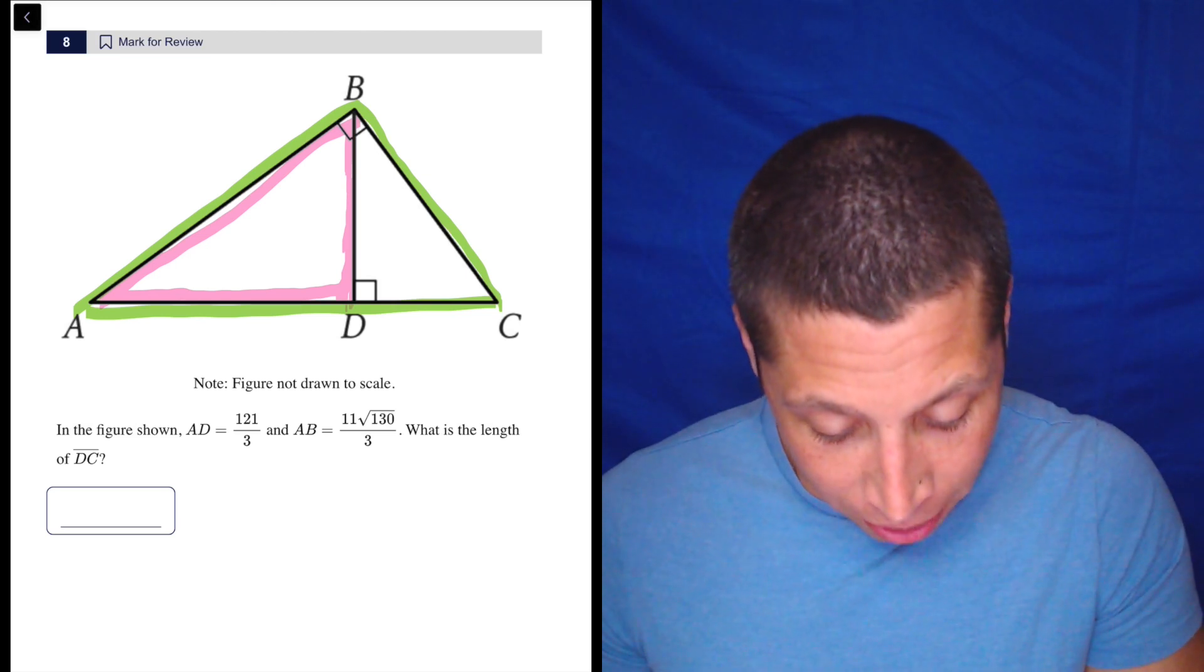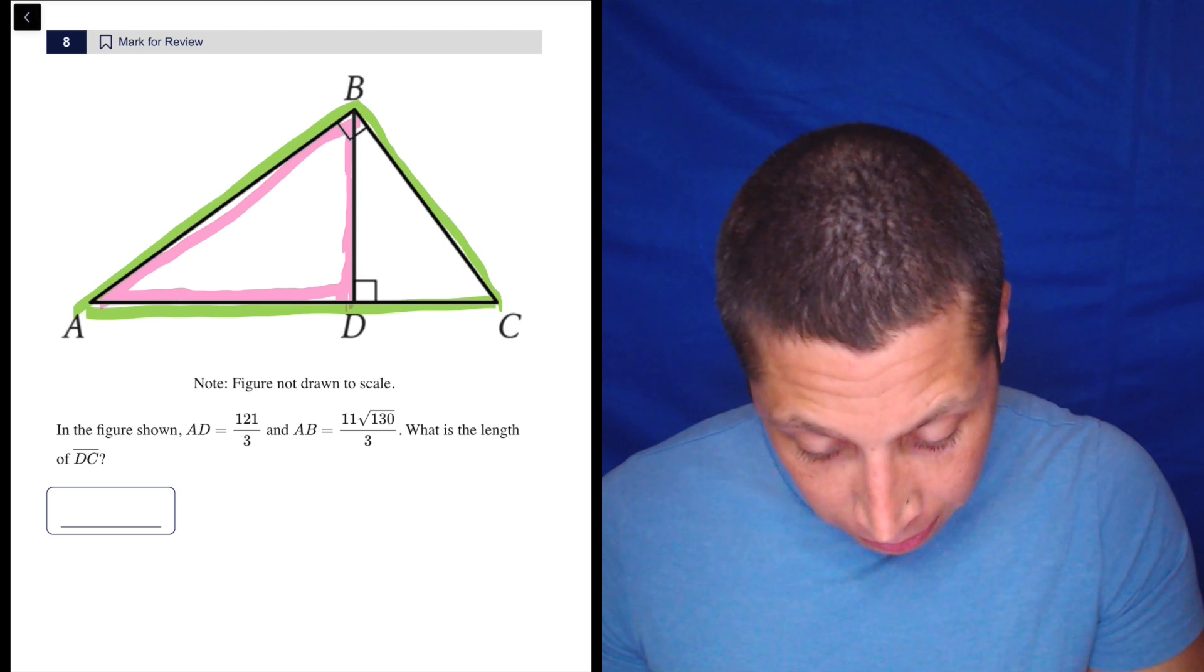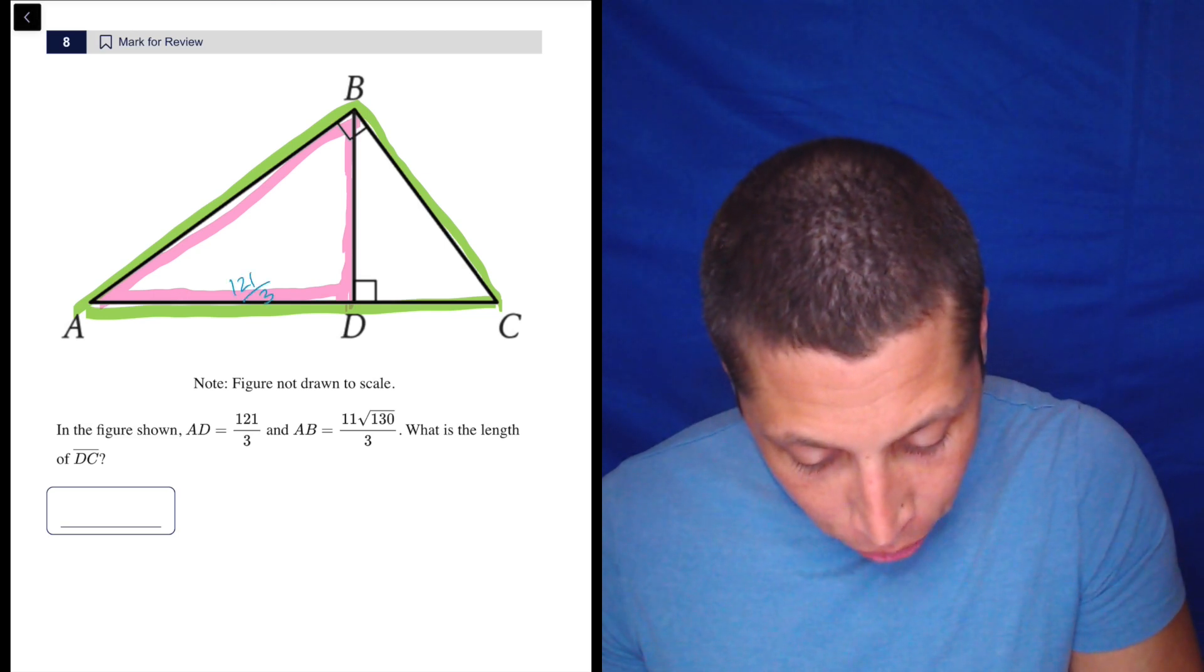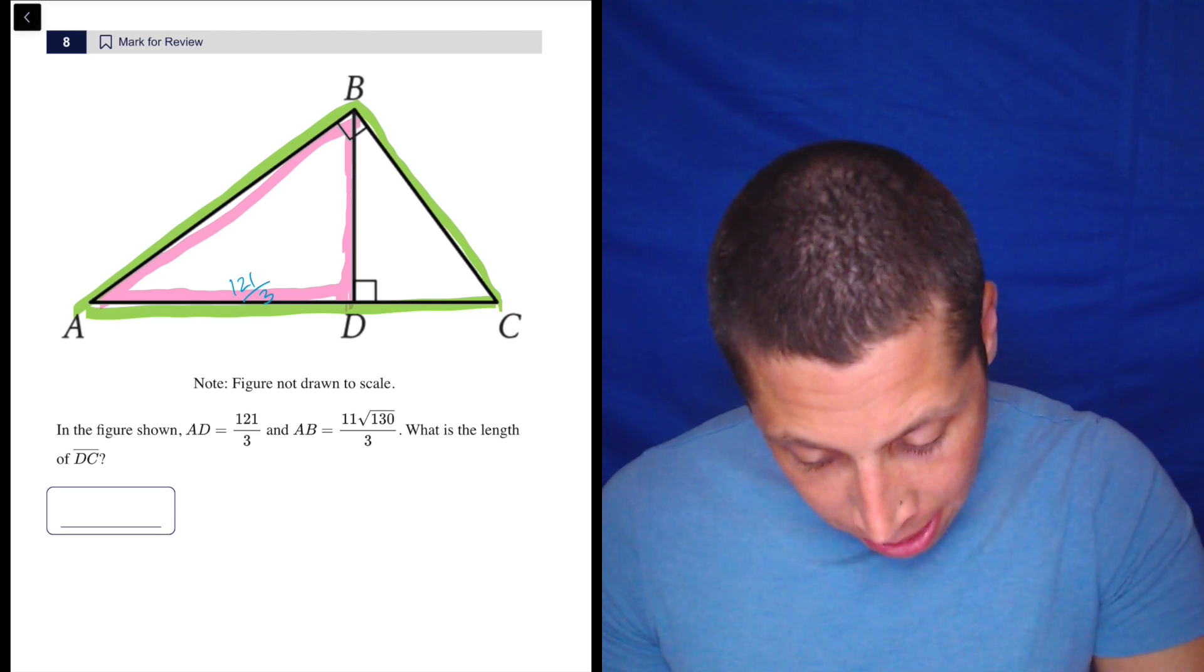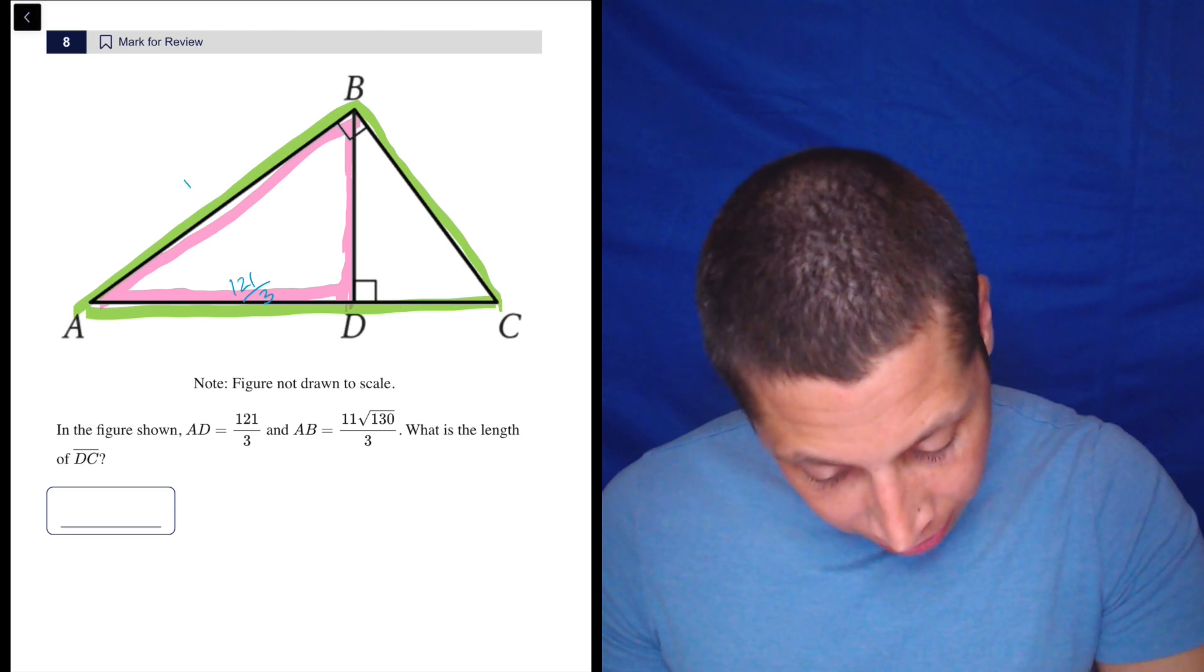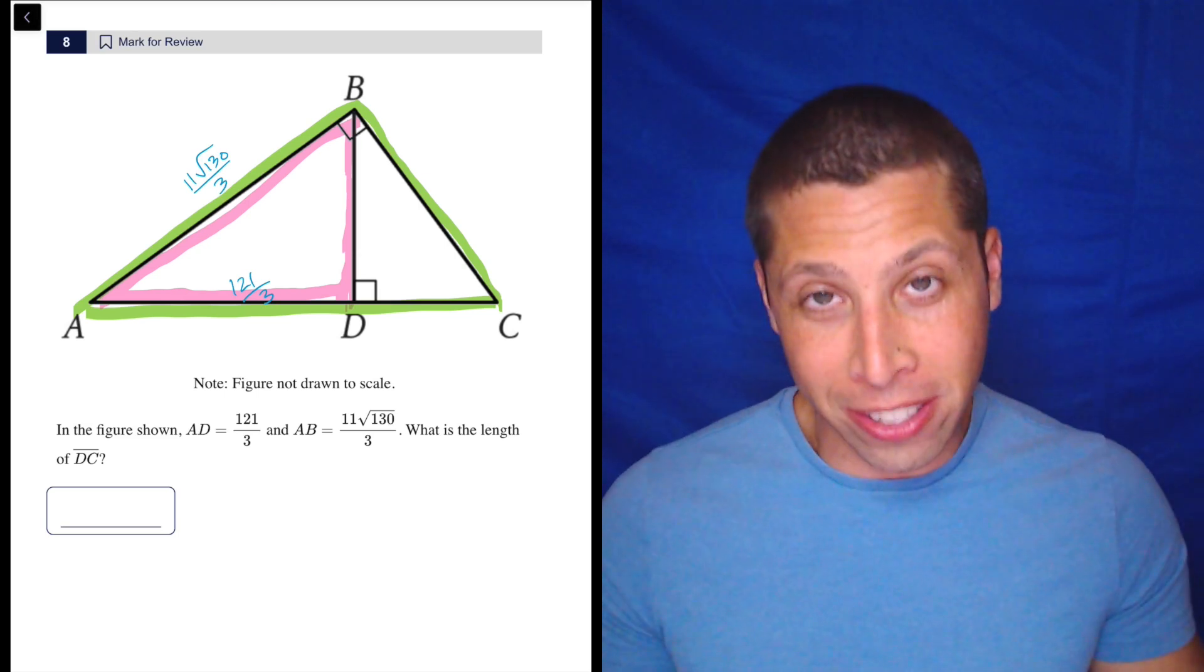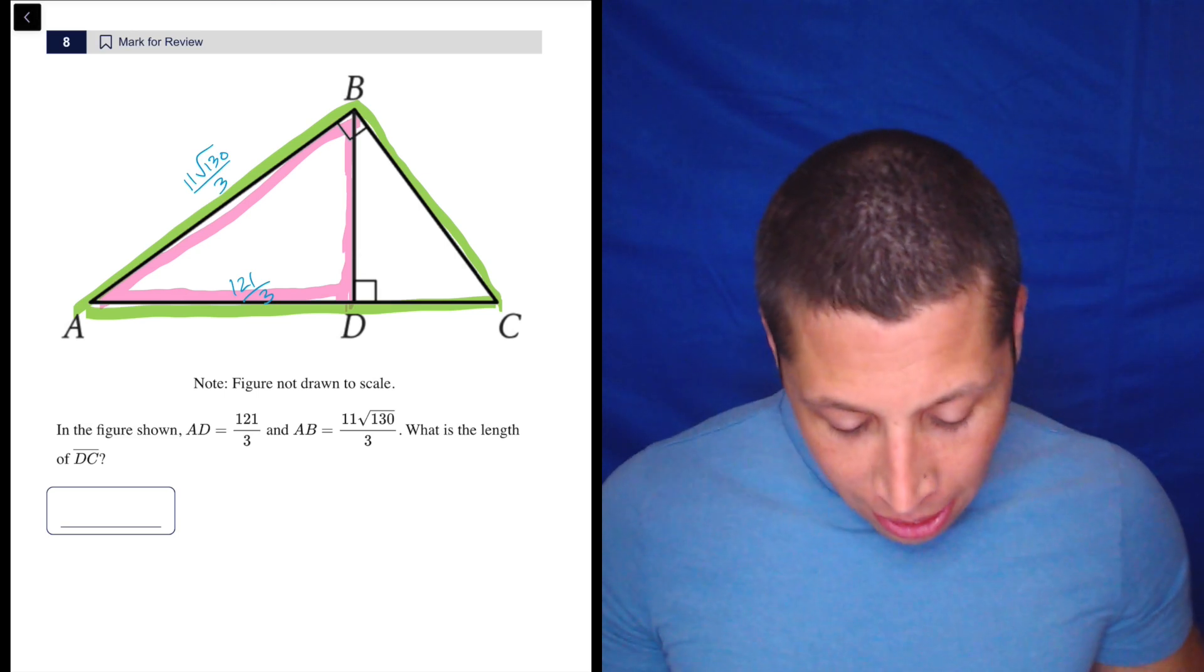Let's see what we can do. We have some dimensions. We have AD is 121 over three. We have AB is 11 radical 130 over three. So at any point we can turn these into decimals, but let's see if we can avoid it.